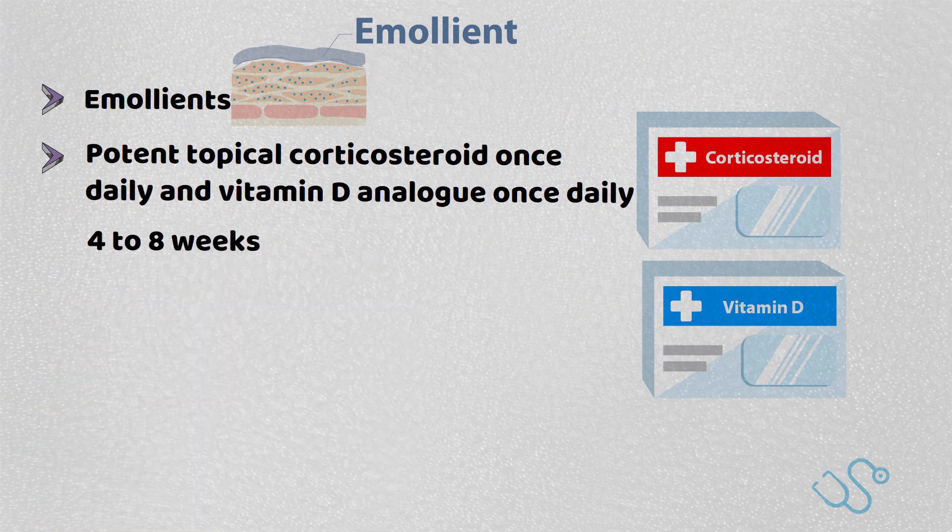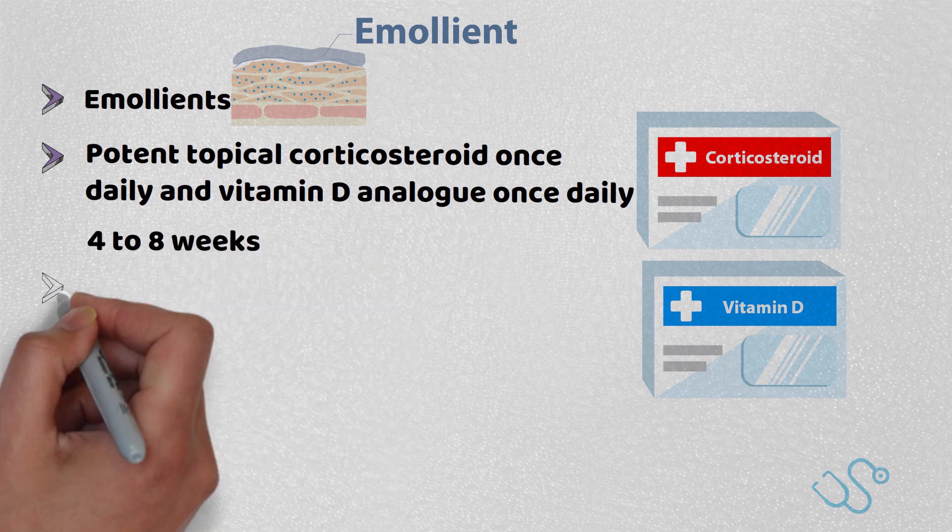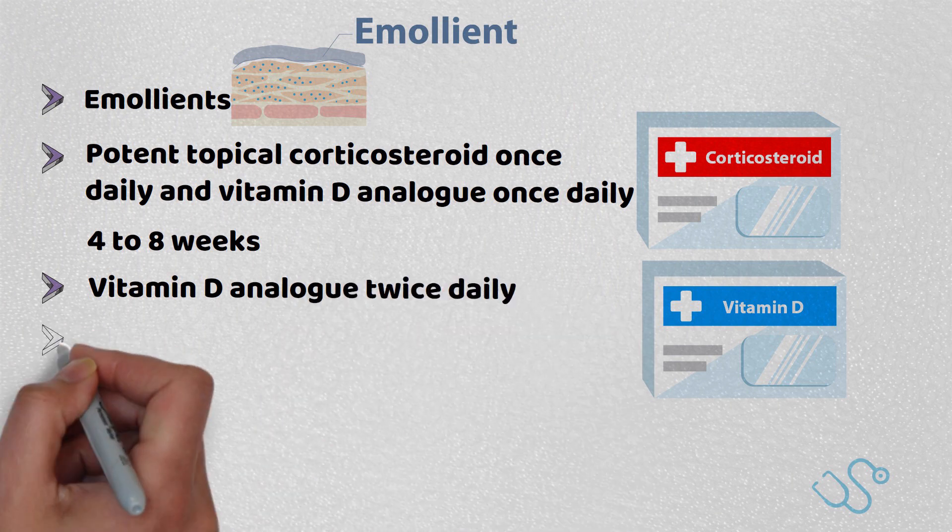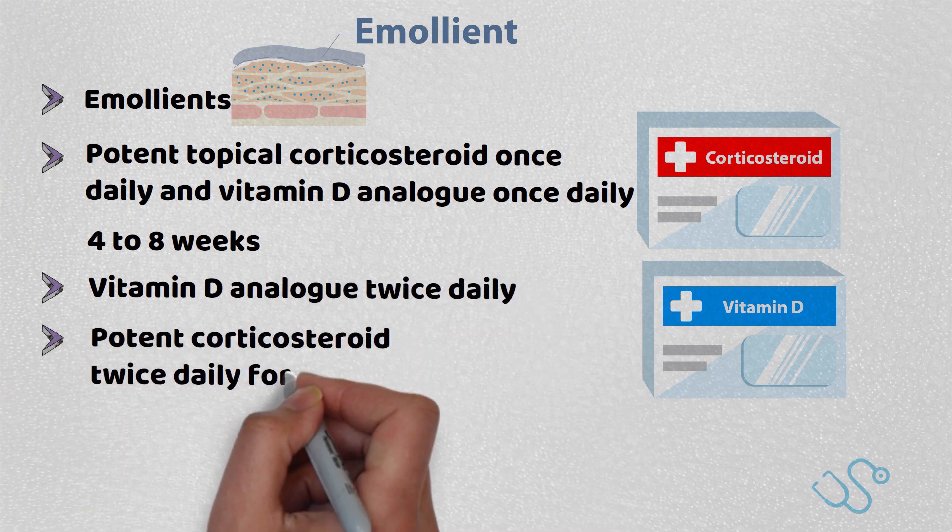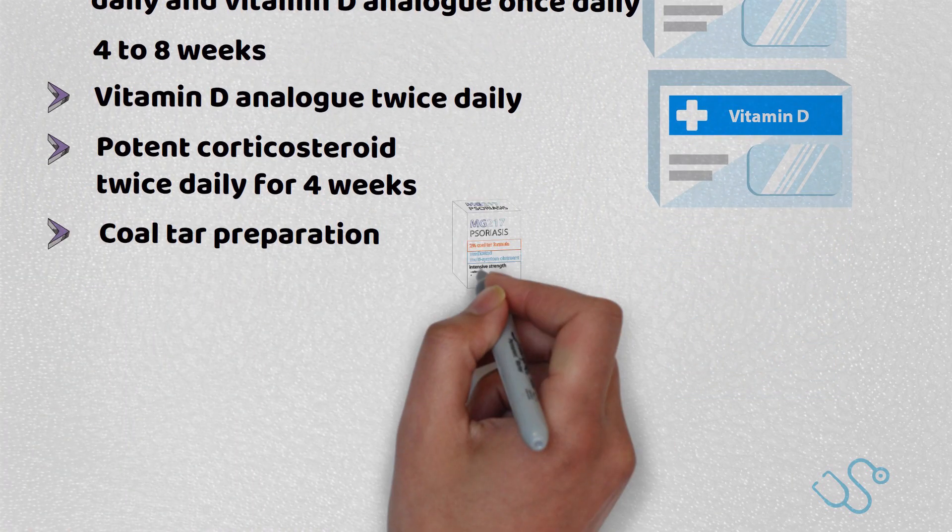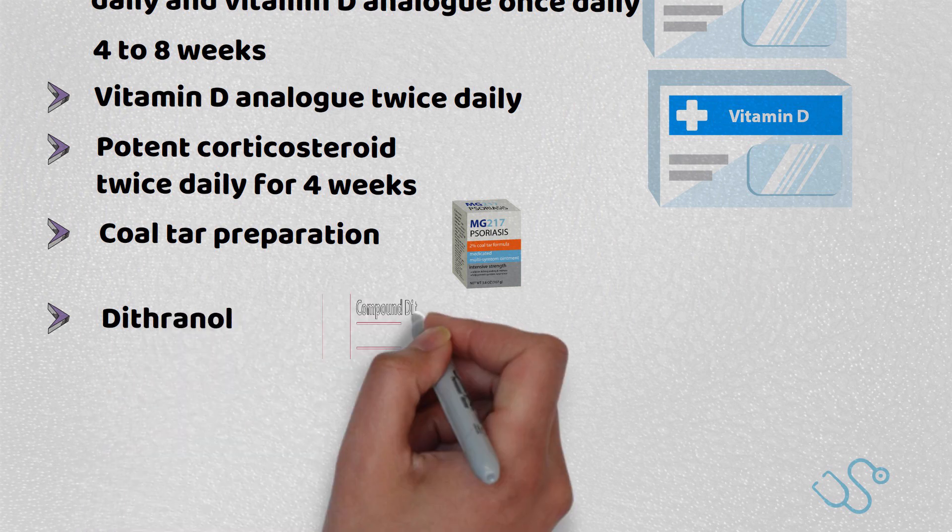This is used between four to eight weeks, where if there's no improvement, NICE recommend vitamin D analogue twice daily. Third line treatment would include a potent corticosteroid twice daily for four weeks or the inclusion of coal tar. Dithranol can also be considered at this point.